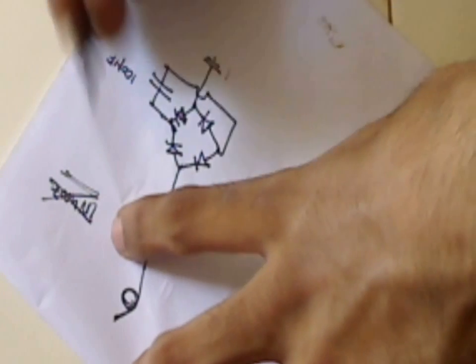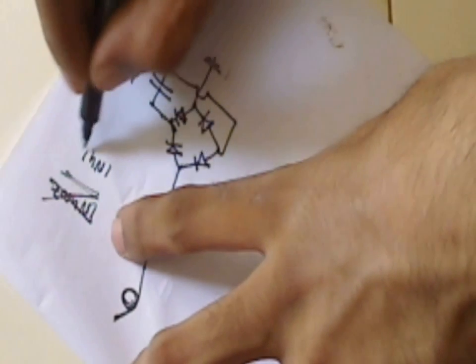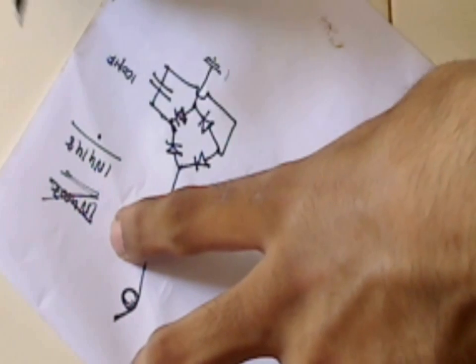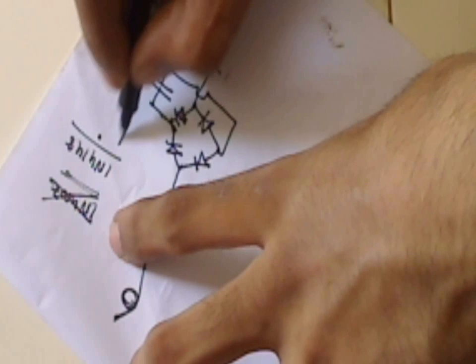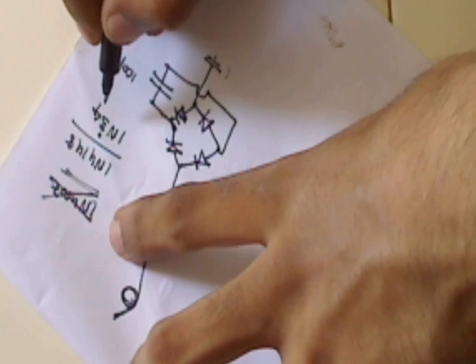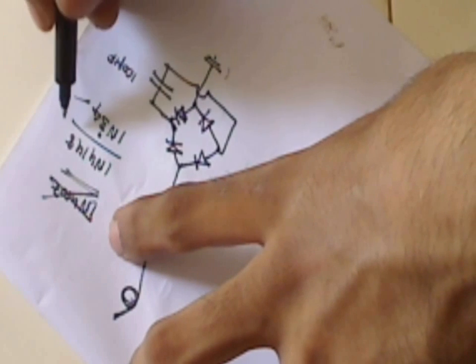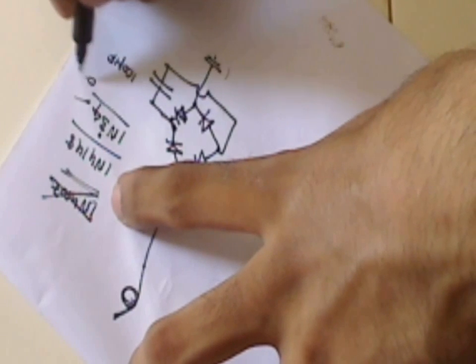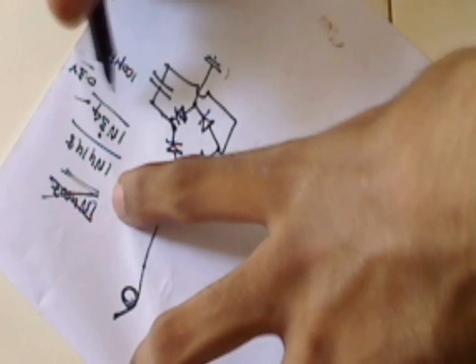We will choose a signaling diode which is a 1N4148 high speed switching diode, or we can also use 1N34 which is a germanium diode. The advantage of 1N34 over 1N4148 is that 1N34 has a voltage drop of 0.3 volts only because it is a germanium diode.